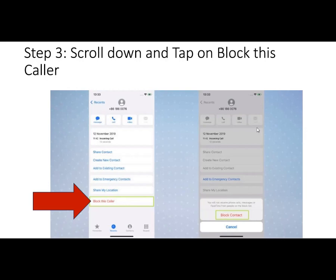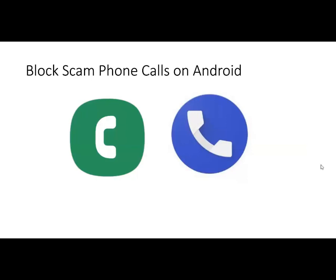If you press the I and it pulls up contacts asking if you'd like to add the number but you don't know who it is, you can just wait to see if they call again and leave a voicemail. But if they keep calling over and over, it's safe to just block them.